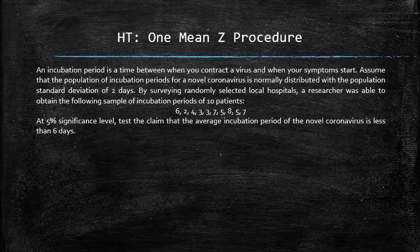An incubation period is the time between when you contract a virus and when your symptoms start. Assume that the population of incubation periods for a novel coronavirus is normally distributed with a population standard deviation of two days. By surveying randomly selected local hospitals, a researcher obtained the following sample of incubation periods of 10 patients: 6, 2, 4, 3, 3, 7, 5, 8, 5, and 7 days. At 5% significance level, test the claim that the average incubation period of the novel coronavirus is less than 6 days.